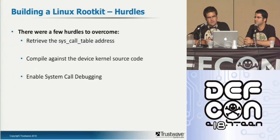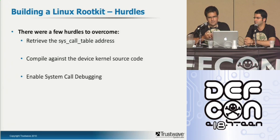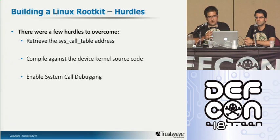While developing this rootkit there were a few hurdles to overcome. It wasn't as straightforward as it would have been on a usual commodity Linux PC. One hurdle — which also exists on commodity PCs — is to retrieve the system call address. Another hurdle was how to compile the actual module against the source code for the device. And another was to enable system call debugging, which would allow us to determine higher-layer phone functions to tap into and hijack.